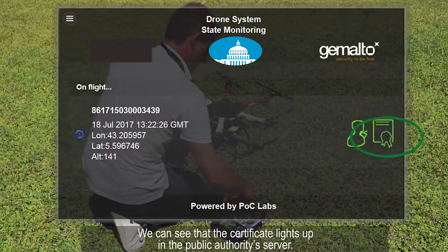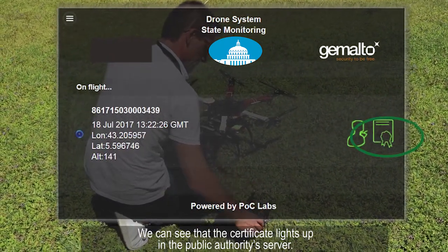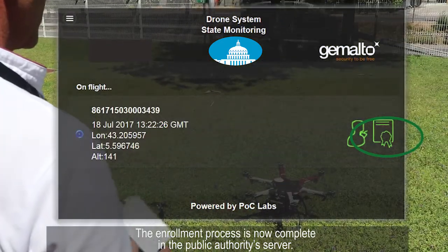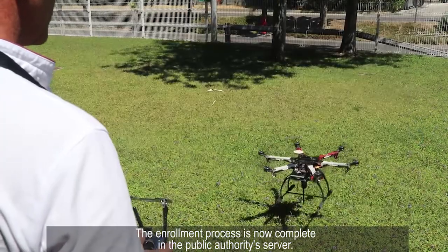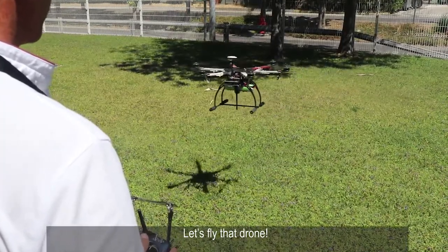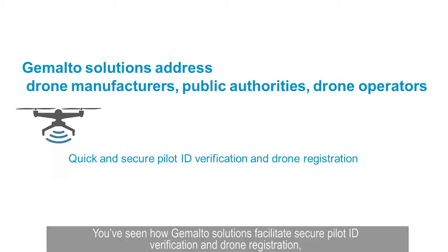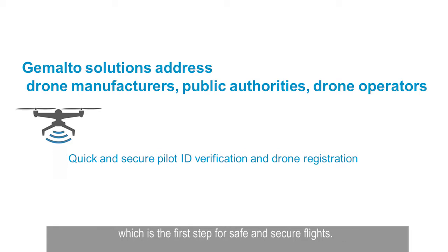At this point, the drone can securely be identified and geolocalized anytime, anywhere, in real time by the public authorities. We can see that the certificate lights up in the public authorities' server. The enrollment process is now complete. Let's fly that drone. You've seen how Gemalto solutions facilitate secure pilot ID verification and drone registration, which is the first step for safe and secure flights.